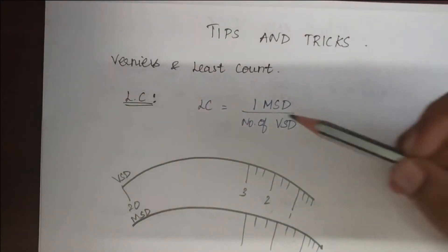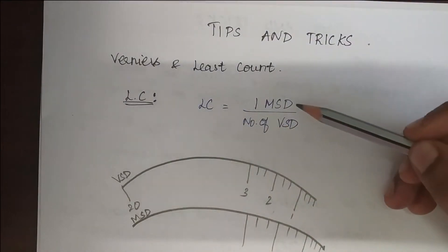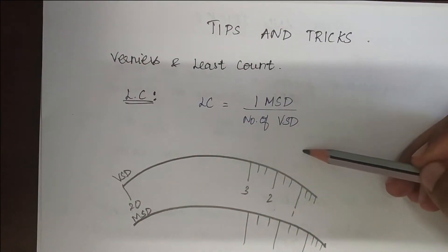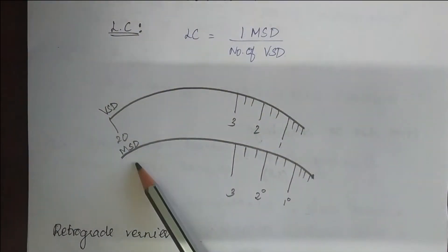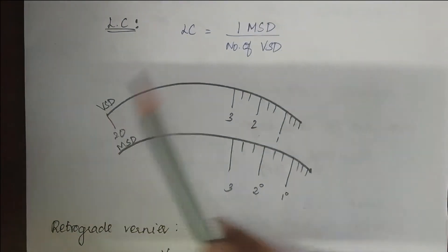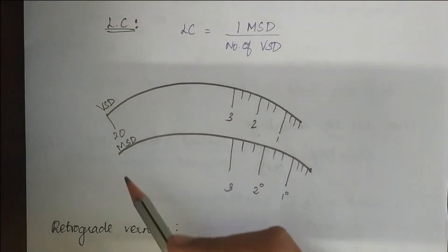By formula we know that least count is equal to one main scale division divided by number of vernier scale divisions. So consider this as a vernier scale and this is the main scale division and this is the vernier scale division.